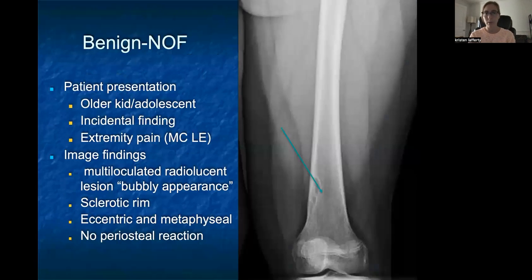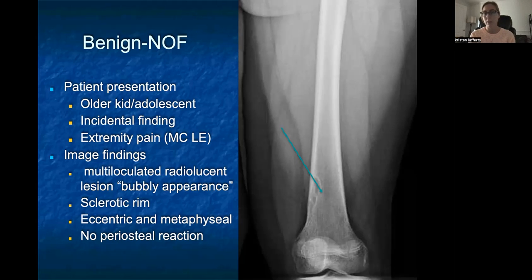Starting with non-ossifying fibroma: these are generally seen in older kids or adolescents, more often as an incidental finding on a radiograph, maybe from an injury. Occasionally patients will have a little bit of extremity pain, and the most common location is in the lower extremities. Radiographic findings usually consist of a multi-loculated radiolucent lesion with a bubbly appearance — radiolucent meaning it appears dark or black in the bulk of the lesion on x-ray — generally surrounded by a nice sclerotic rim, giving us a narrow zone of transition.